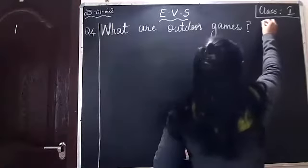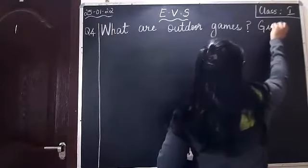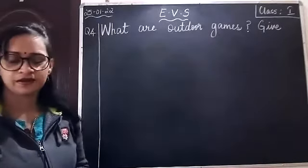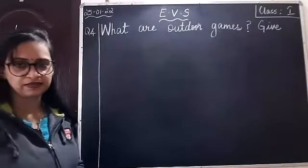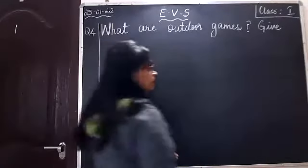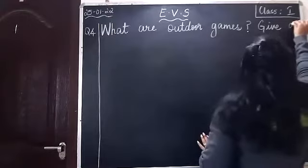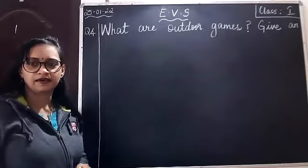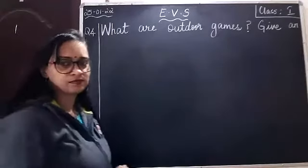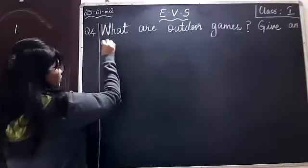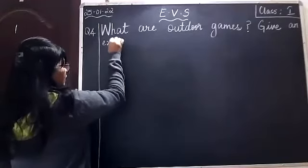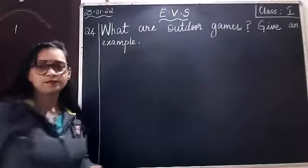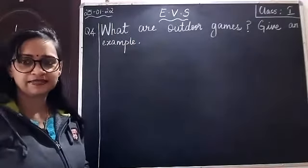Leave a finger space, write down capital G-I-V-E. Give. Leave a finger space, write down A-N and leave a finger space, write down E-X-A-M-P-L-E. Example.